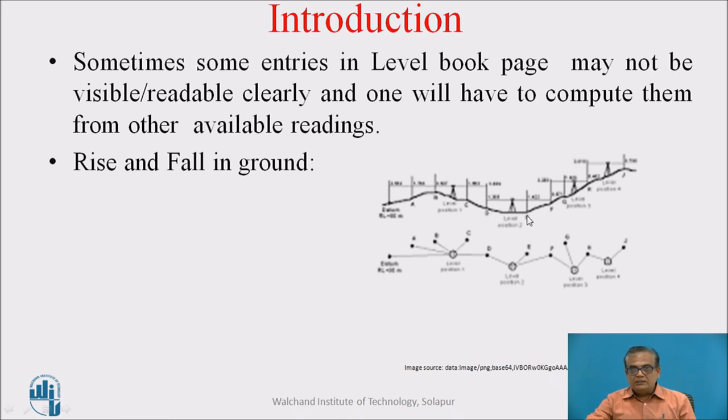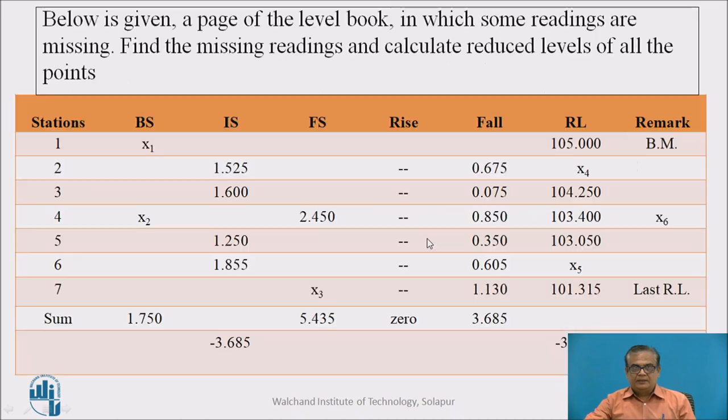What will happen? When fall is there, part of the staff will go down. More part of the staff will go below and the reading will increase on the staff. When there is a rise in ground, the reading on staff will decrease automatically because staff will be coming up. So that is the important thing which is to be kept in mind. When fall is there, reading will be more. When rise is there, reading will be less.